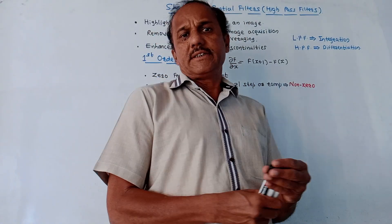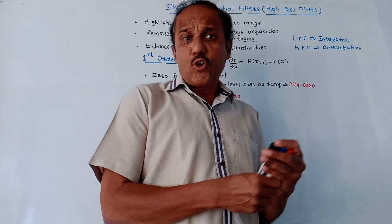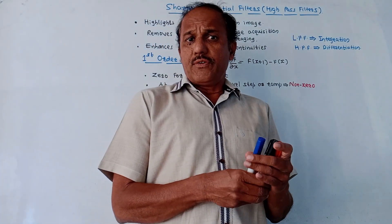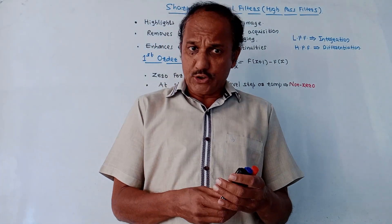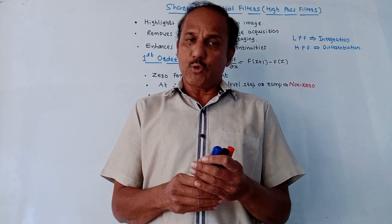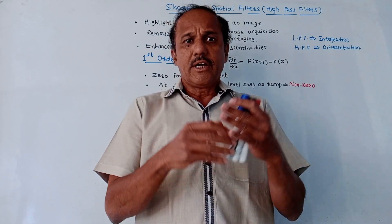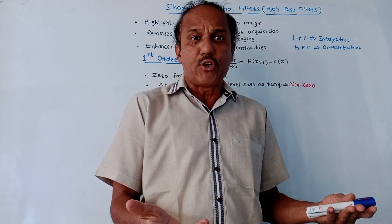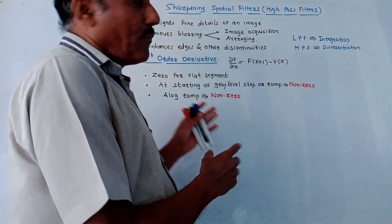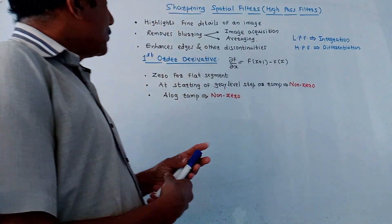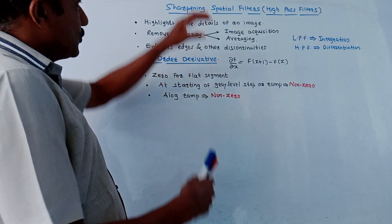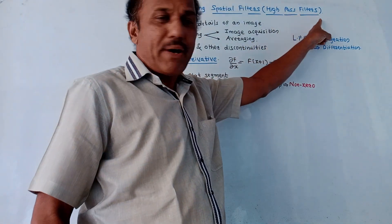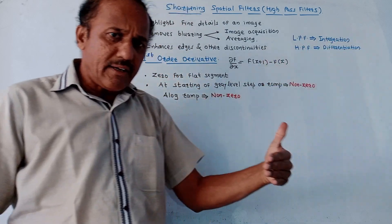Dear students, this is the last video of unit number two in digital image processing. You have histogram processing, histogram equalization, and histogram in a separate video already uploaded. This will be the last video of unit number two. Today's topic is sharpening spatial filters, that is high pass filters.